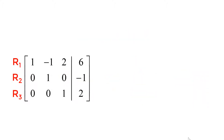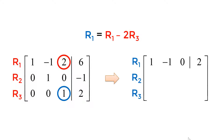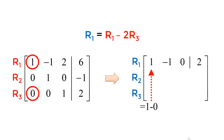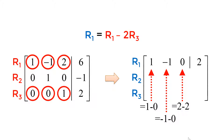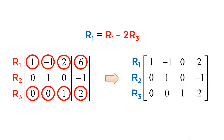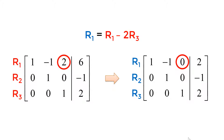Next step is to reduce my 2 to 0. I will use 1 in the third row, third column as a pivot point. Since I have 2, I will multiply 2 on R3 and subtract from the first row element by element. My 1 comes from 1 minus 0, my minus 1 comes from minus 1 minus 0, my 0 comes from 2 minus 2, and my 2 comes from 6 minus 4. I keep all elements in the last two rows the same. You successfully made 0 in the first row, third column.